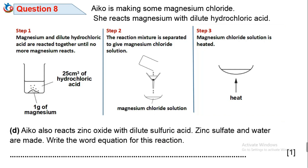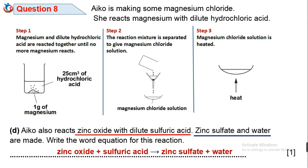Question 8d: Aiko also reacts zinc oxide with dilute sulfuric acid — zinc sulfate and water are made. Write the word equation for this reaction. Both the reactants and products are already stated. The reactants are zinc oxide and sulfuric acid, while the products are zinc sulfate and water. So the word equation is: zinc oxide + sulfuric acid → zinc sulfate + water.